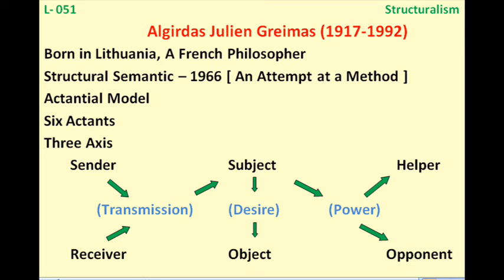The title 'actantial model' comes from the word 'act,' and then words like actor, act, and acting. According to him, every story has different roles, functions, and actions. Primarily he says that there are six main actants in every story. 'Actant' means the one who performs the act or action.